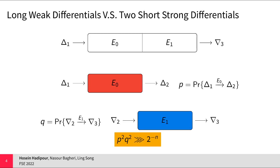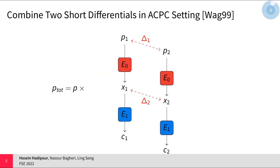For example, what if there exist differential transitions for E0 and E1 with probability p and q respectively, such that p squared times q squared is much greater than 2 to the minus n? The core idea of boomerang cryptanalysis is combining these two short differential transitions in an adaptively chosen plaintext/ciphertext attack to build a distinguisher for the block cipher.